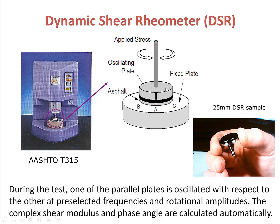This is a schematic illustration of the experimental process. During the test, one of the parallel plates is oscillating — the upper one — with respect to the lower one. The lower one is fixed, and the upper one is oscillating at preselected frequencies and rotational amplitude. The complex shear modulus and the phase angle will be calculated automatically by the software associated with the dynamic shear rheometer.